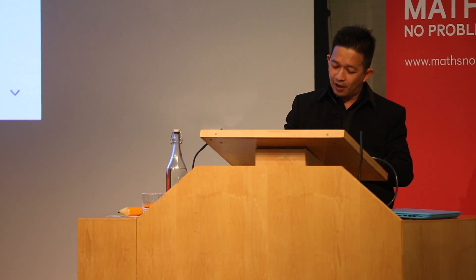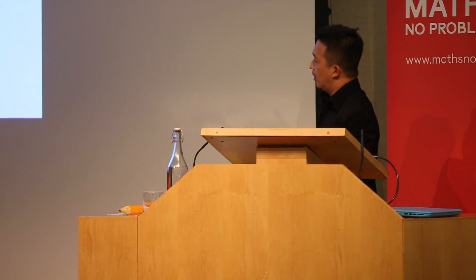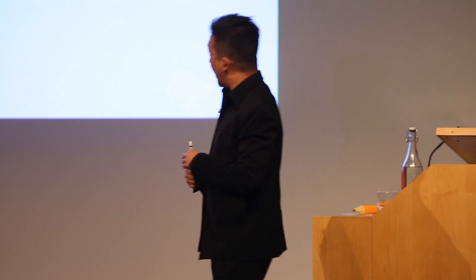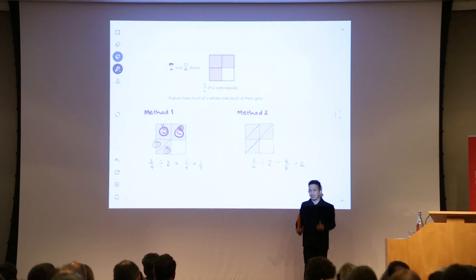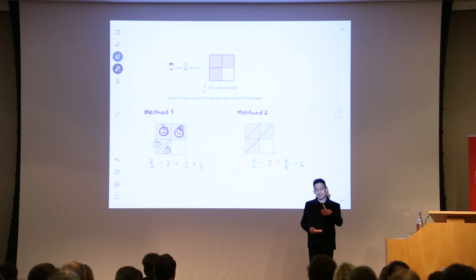In today's lesson we are going to solve a problem, and the problem is that we have a cake. It's never a problem when you have a cake. They decide to share three quarters of a cake so that each of them gets the same amount. Can you now talk to your friends? Explain how much of a whole cake each of them gets. Are you sure the name of the slice is an eighth? You can check for yourself — if eight of those make the whole cake, it is an eighth.